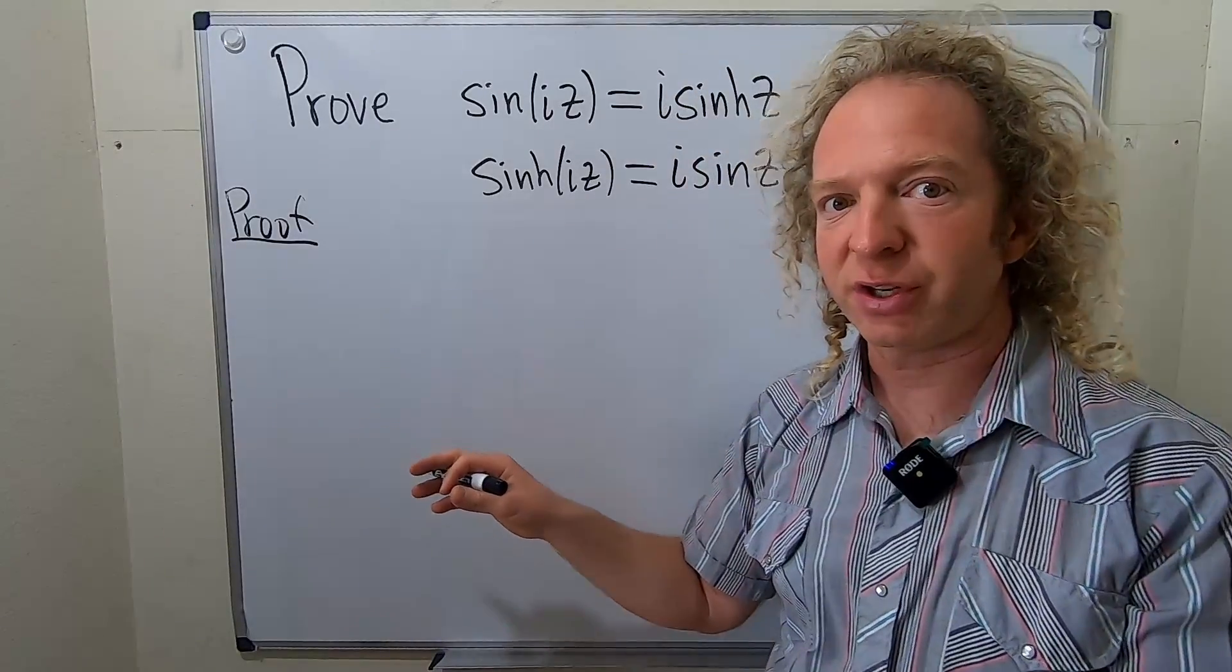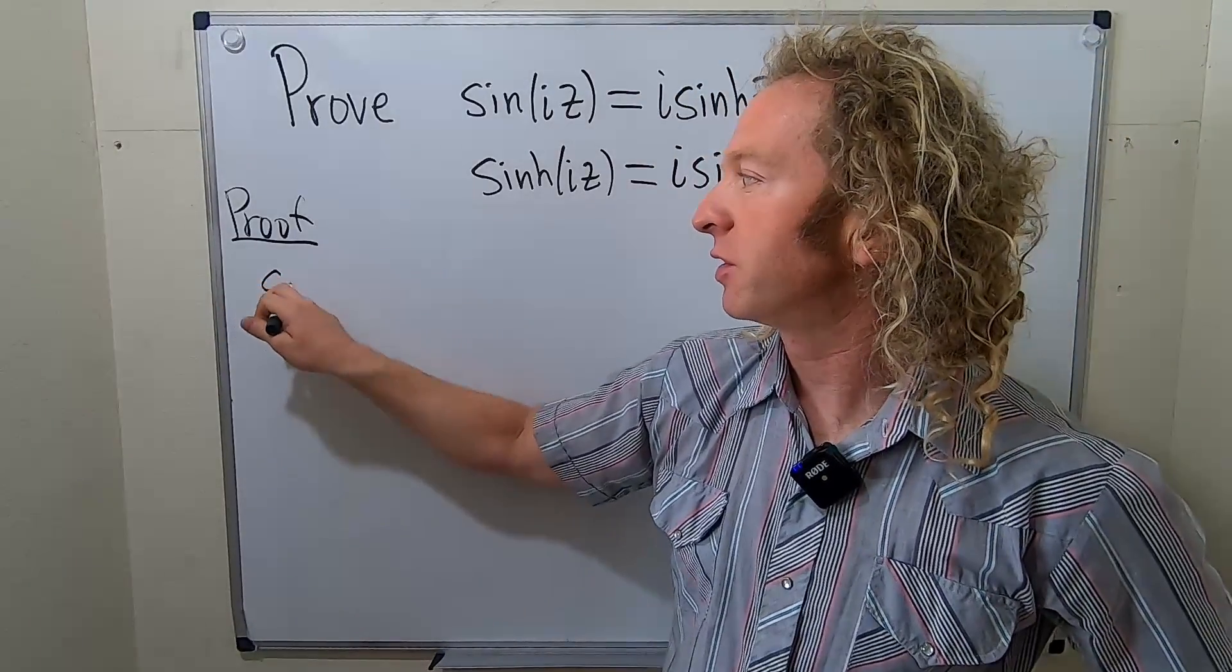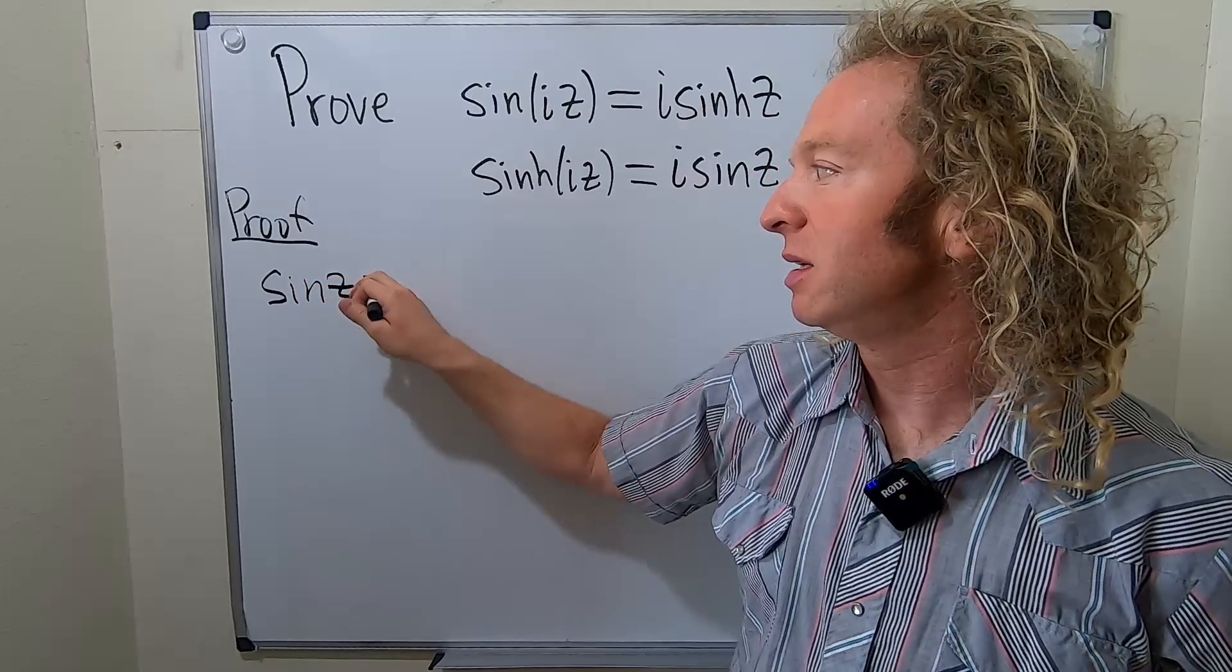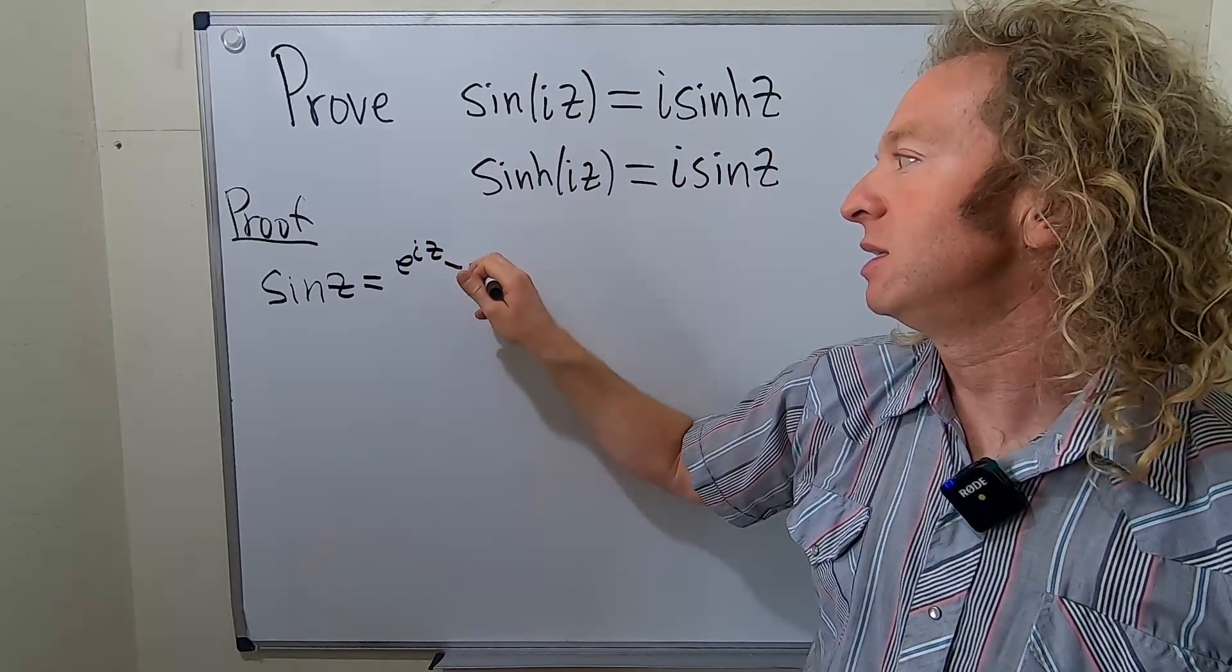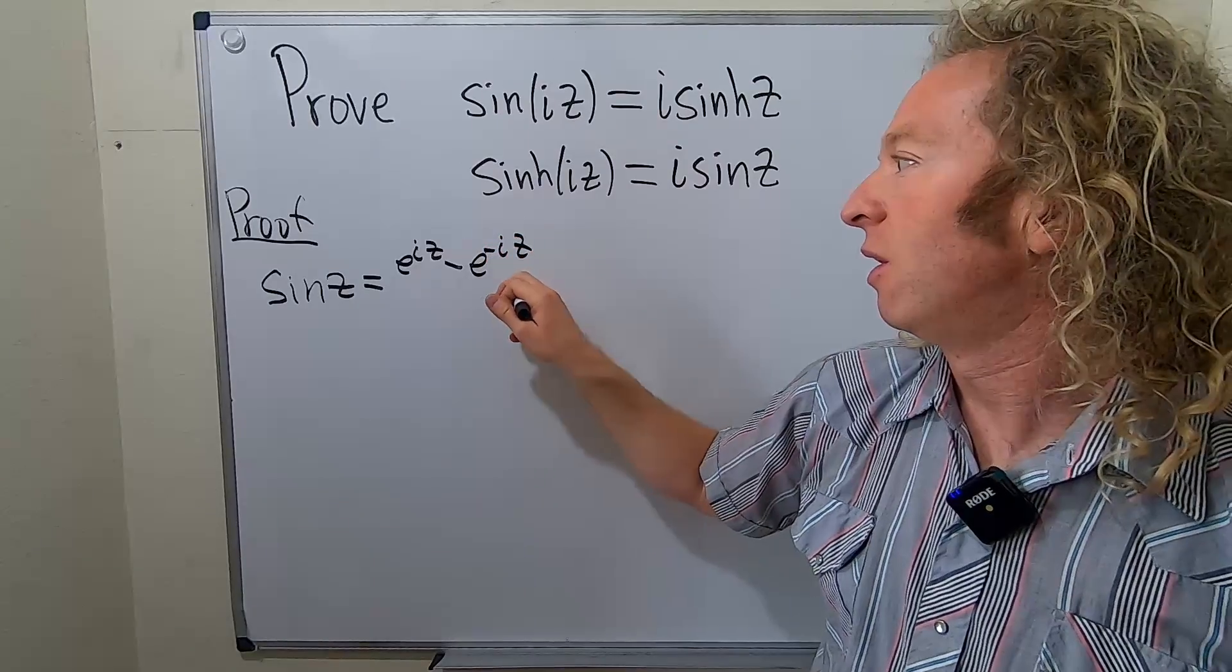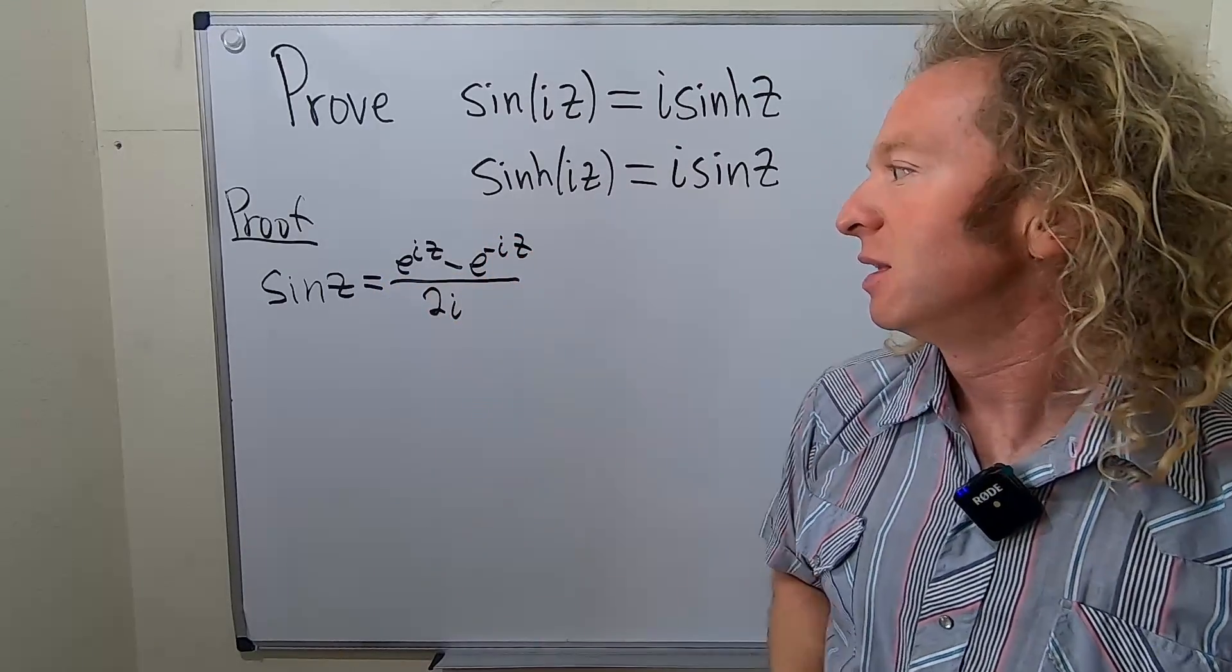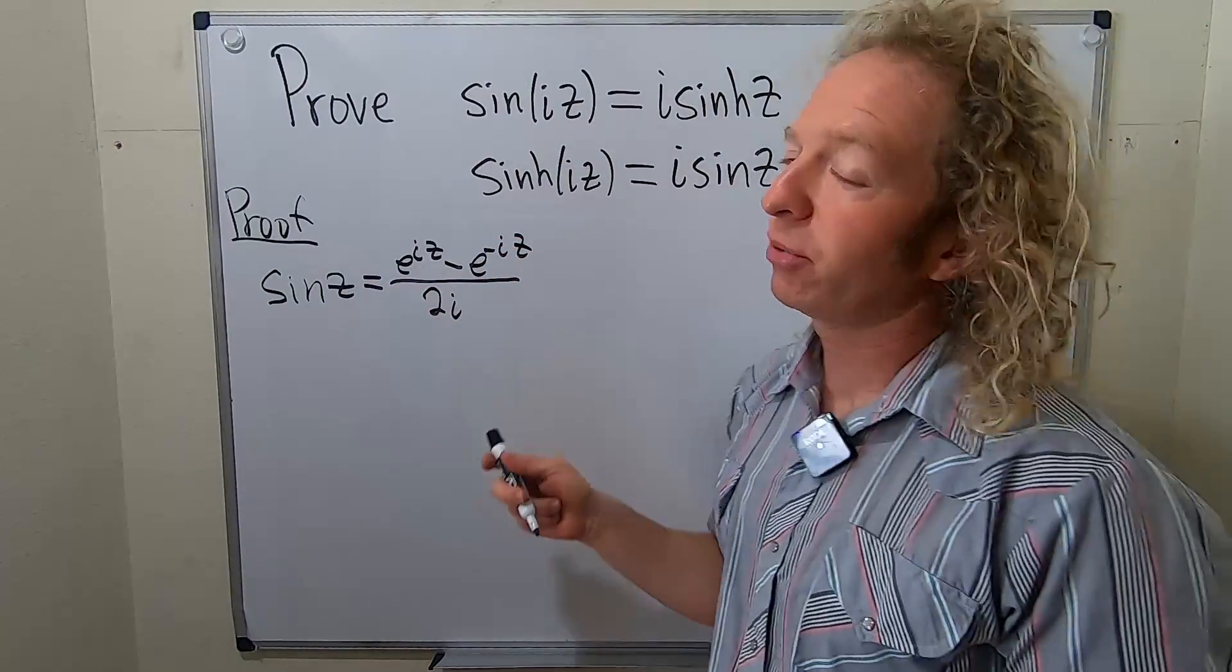So first, recall the definition of the complex sine function. So that's sin z equals e to the iz minus e to the negative iz all over 2i. So that's the definition of the complex sine function.